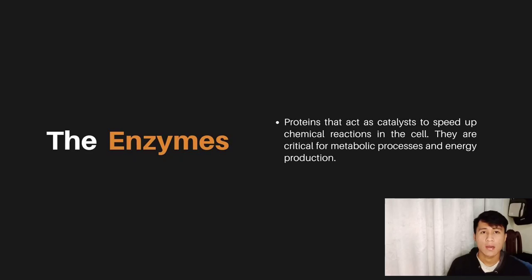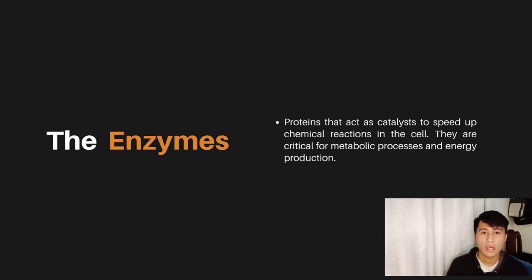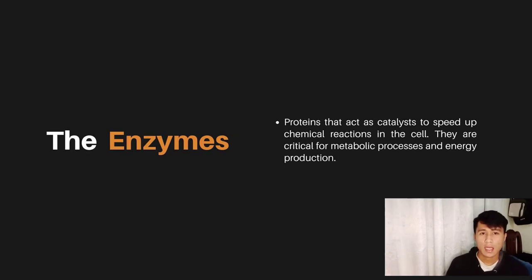Enzymes are critical for metabolic processes and energy production. An example is the digestion of food in the human body. The enzyme lactase, found in the small intestine, helps break down lactose into simpler sugars — glucose and galactose — that can be absorbed into the bloodstream. Without lactase, lactose would not be efficiently broken down and absorbed, leading to lactose intolerance, a common digestive disorder.